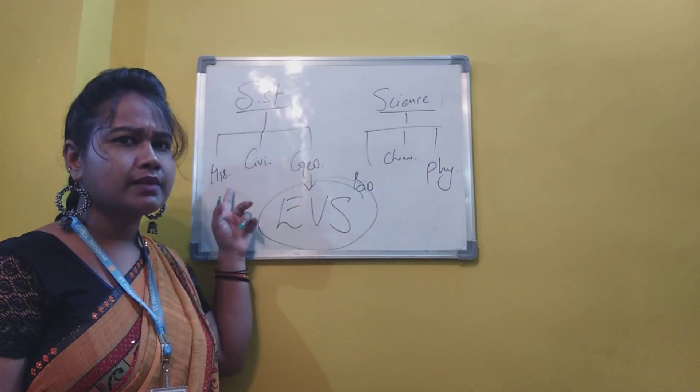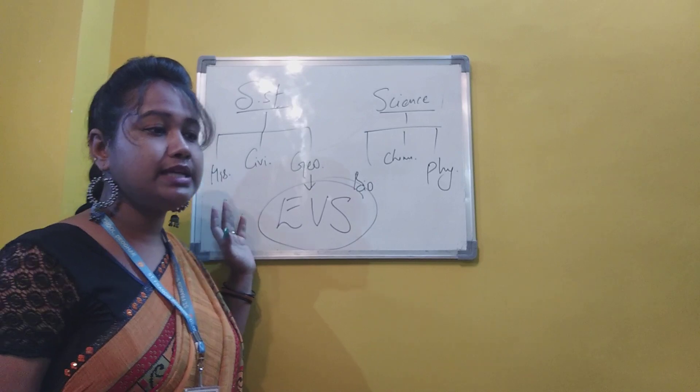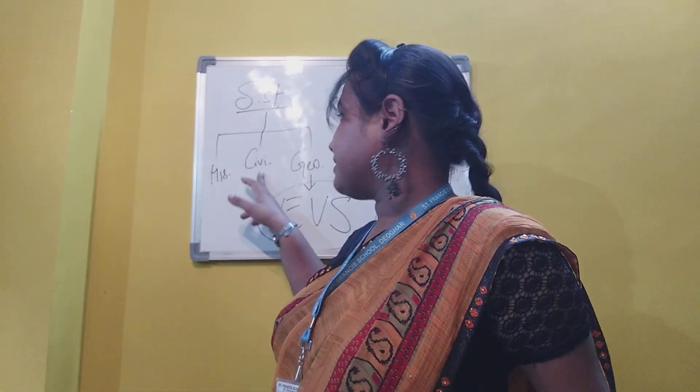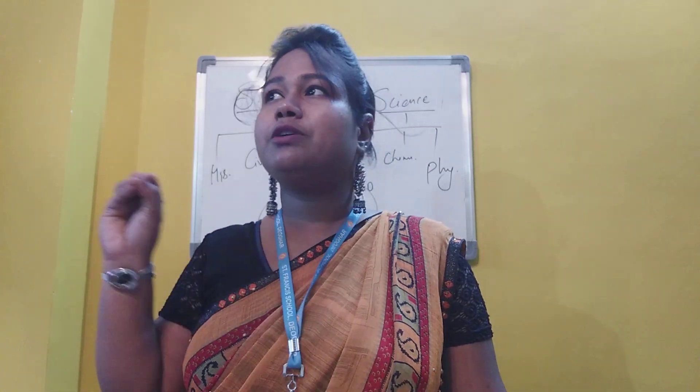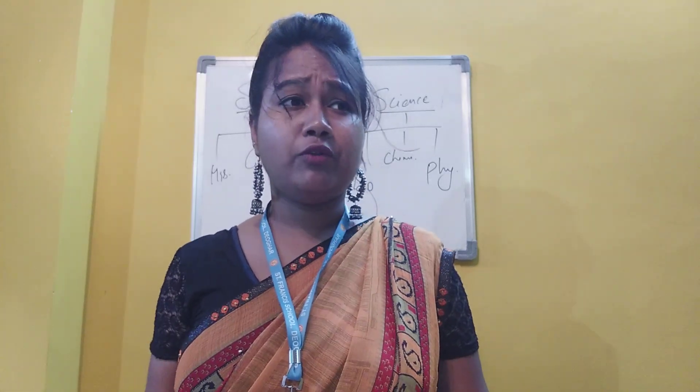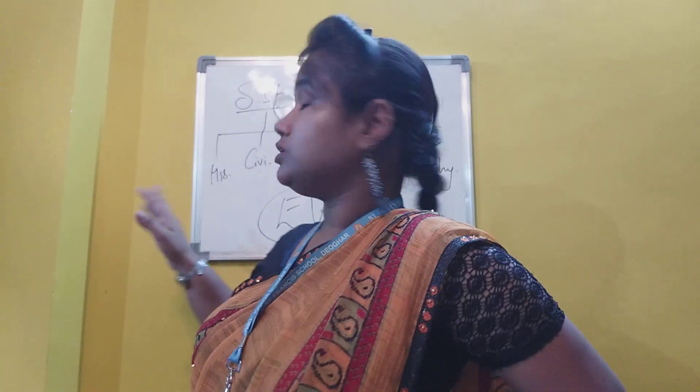What do we study in history? History is the branch of social studies in which we talk about past events — things that have happened from long ago till this modern period. Civics deals with the political structure: how our government runs, what the constitution is, and the political things of our country or countries in the world. Our subject, however, is geography.